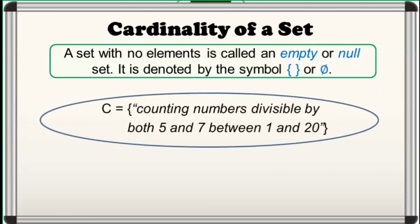For instance, let set C be the set of numbers divisible by both 5 and 7 between 1 and 20. Pag sinabing divisible, maaari natin siyang i-divide na walang remainder. Ngunit, walang number between 1 and 20 na divisible pareho ng 5 at 7. So, set C is a null or empty set. Therefore, the cardinality of C or N of C is equal to 0.